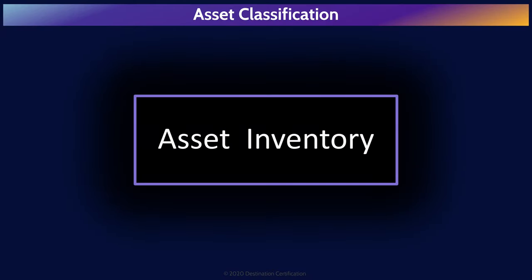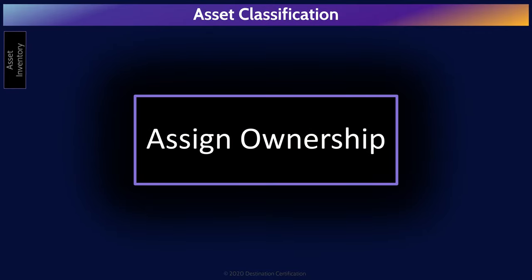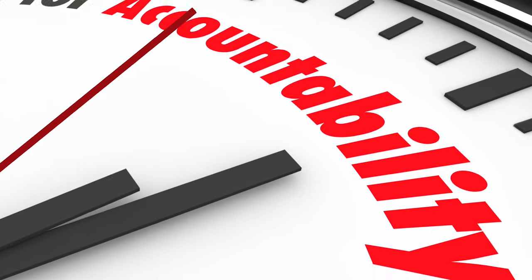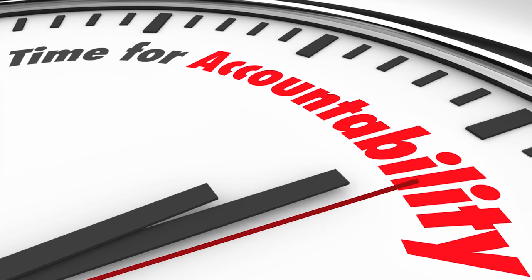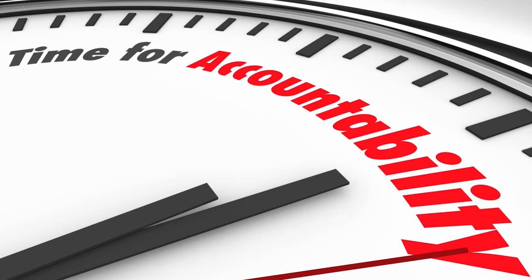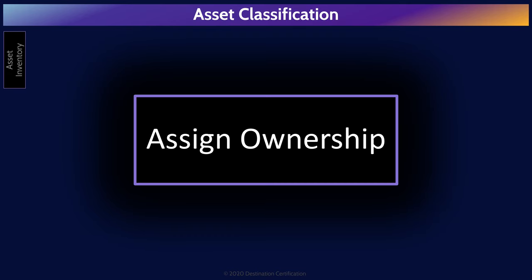The first step in the asset classification process is creating and maintaining an asset inventory — a catalog, a listing of all the assets from across the organization. For every single asset, there should be a clearly defined owner. It is critical to determine who the asset owner is, as the owner is accountable for the protection of an asset. The owner is best positioned to determine how valuable an asset is to the organization, and thus what classification the asset should be assigned.